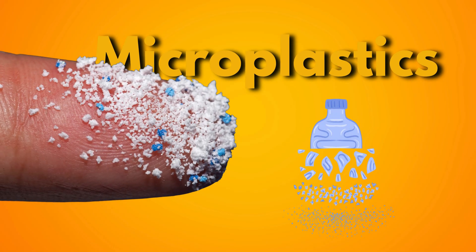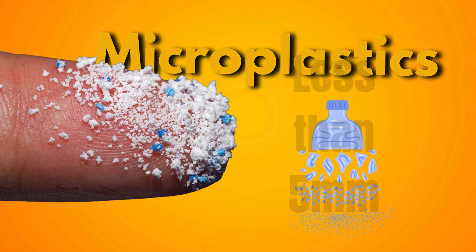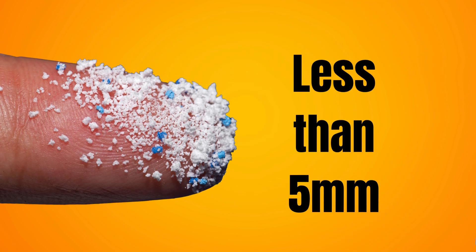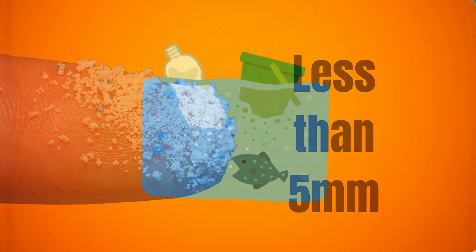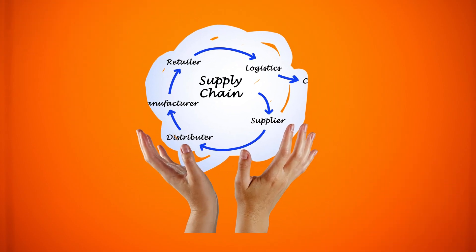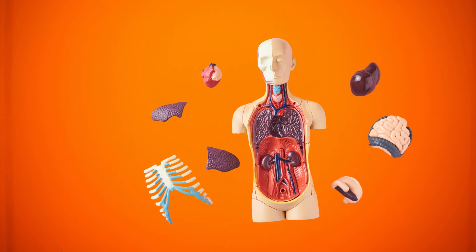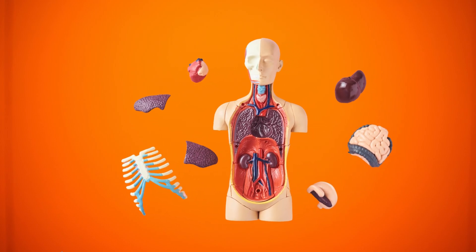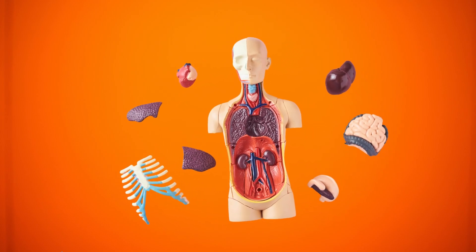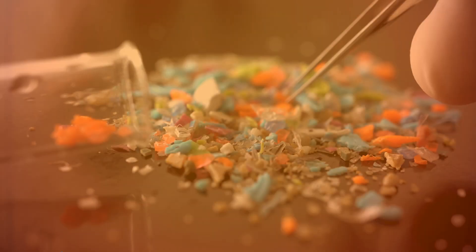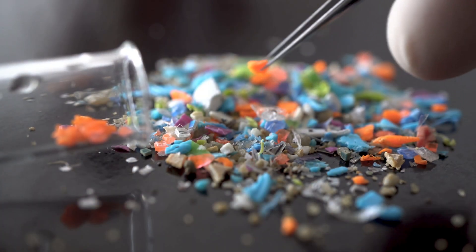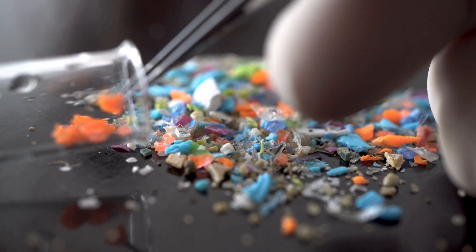Microplastics are tiny plastic particles, typically less than 5 mm in size, that have become pervasive pollutants in the environment. They can enter the food chain and, ultimately, the human body, posing potential health risks. Here's how microplastics enter food and the potential harm they can cause.